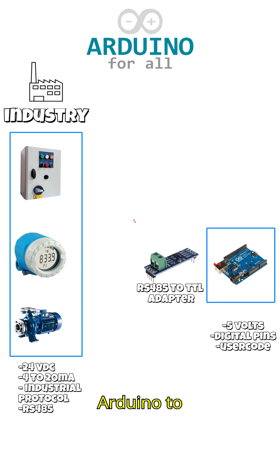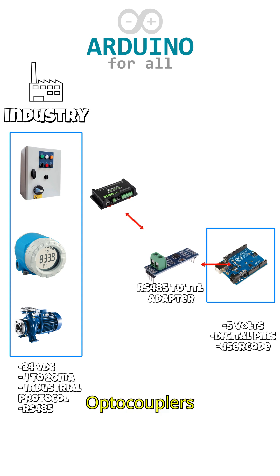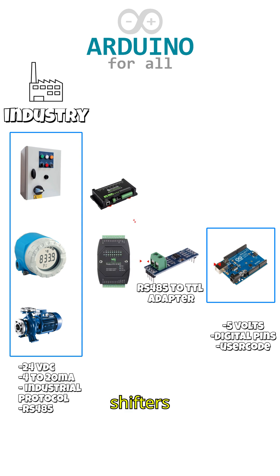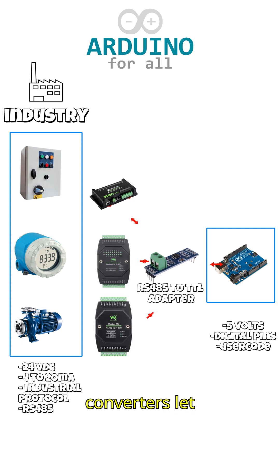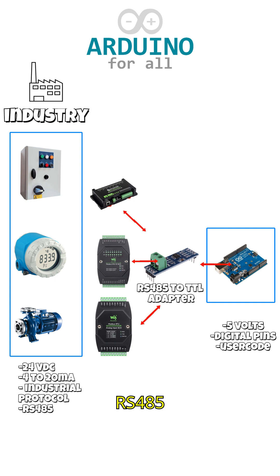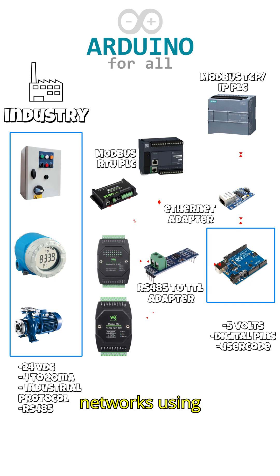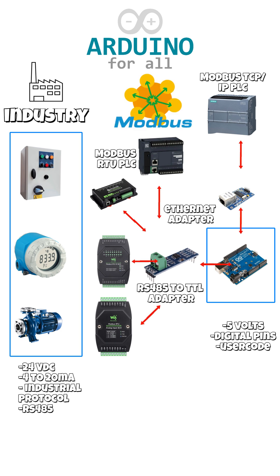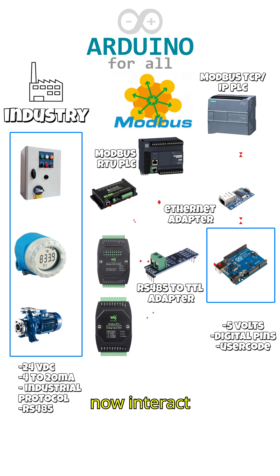Relay boards allow Arduino to control pumps, motors, or lamps. Optocouplers and level shifters protect the Arduino and adapt voltages. Current loop converters let it read 4 to 20 milliamp sensors for temperature, pressure, or flow. RS485 transceivers enable communication with PLCs and networks using Modbus RTU. With these bridges in place, the Arduino can now interact with industry.